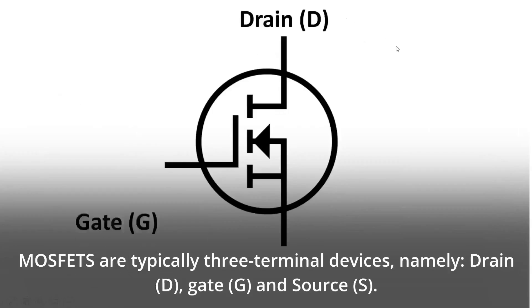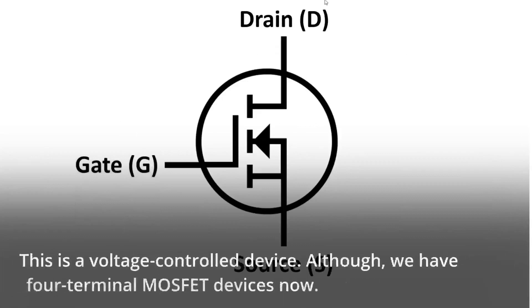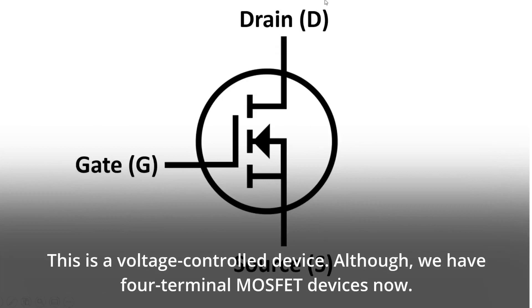Typically three terminal devices, namely drain (D), gate (G), and source (S). This is a voltage-controlled device. Although, we have four terminal MOSFET devices now.